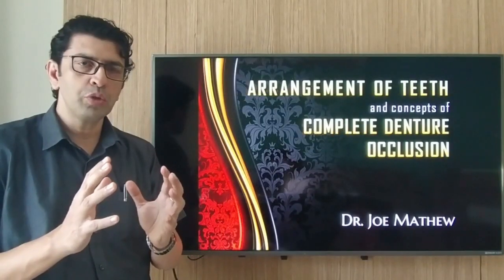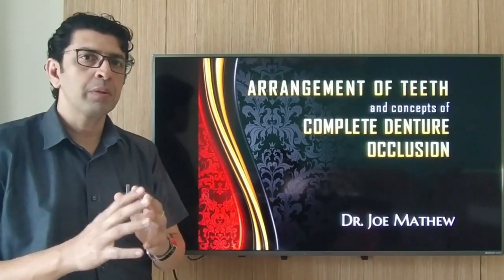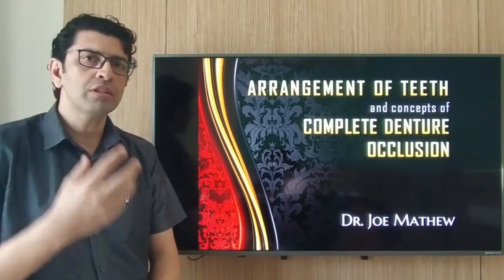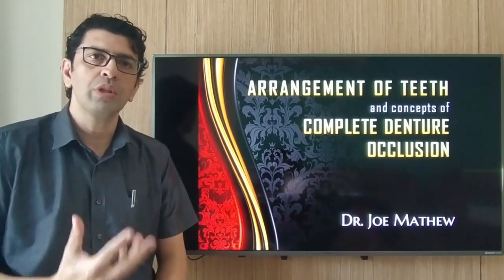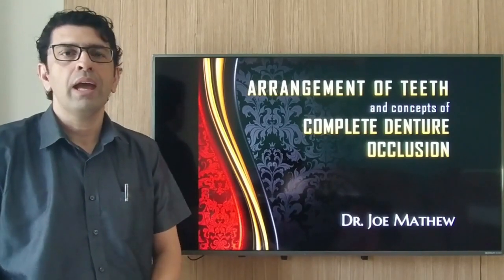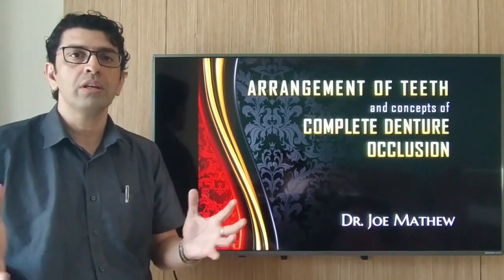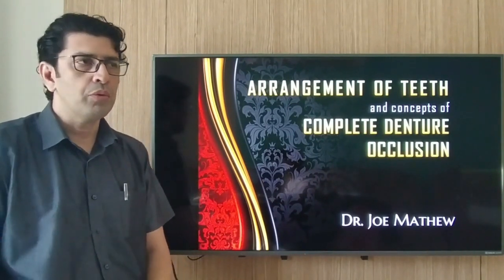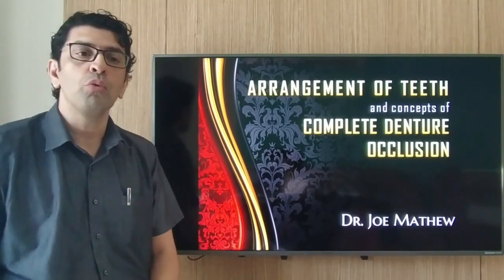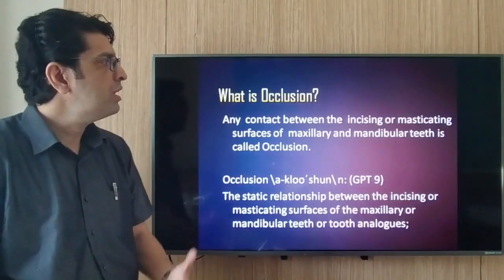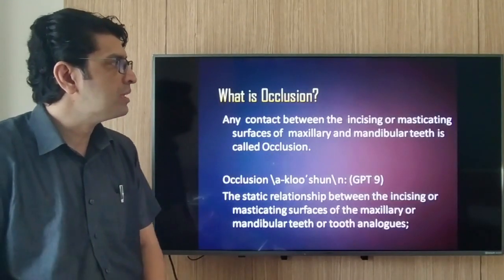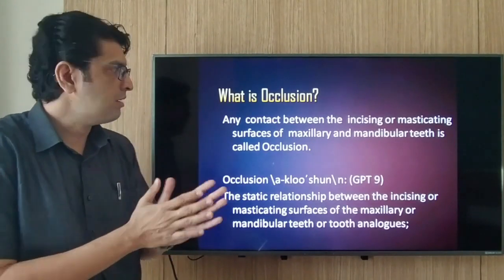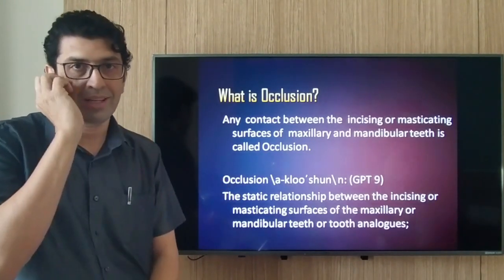Today's lecture is going to be more explanatory with a lot of text, but I want you to listen to me. The text is primarily there so that we don't miss anything, and secondly so that you get all the information collected from different books. First, we need to think about what occlusion is. Occlusion is any contact between the incising or the masticating surfaces of maxillary and mandibular teeth — very simple.